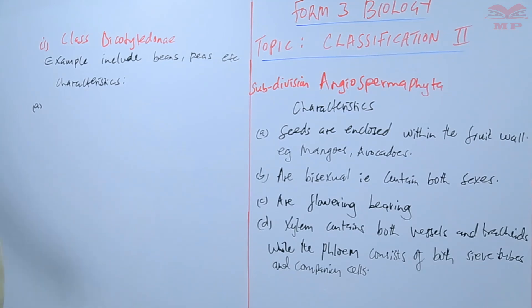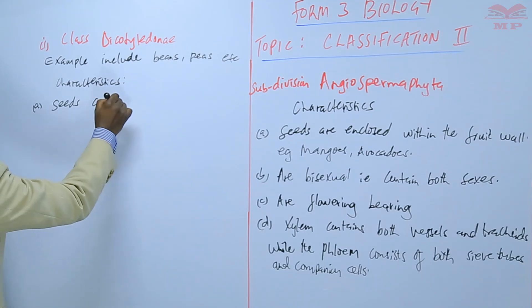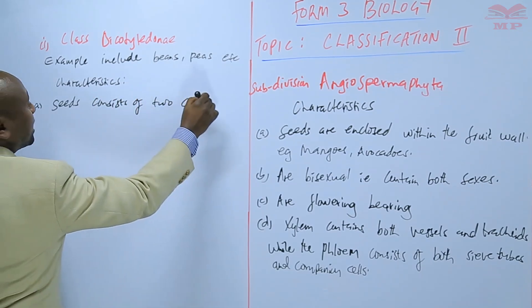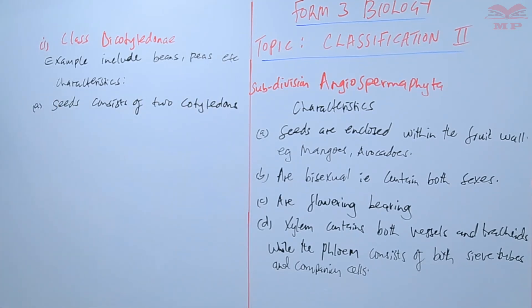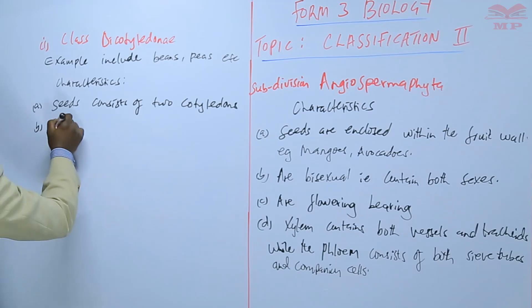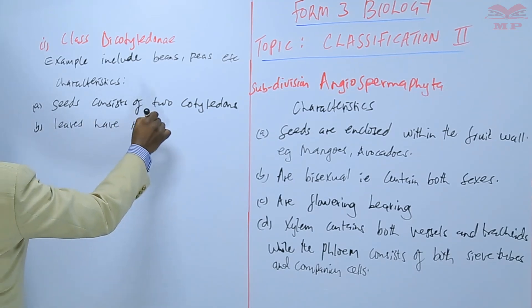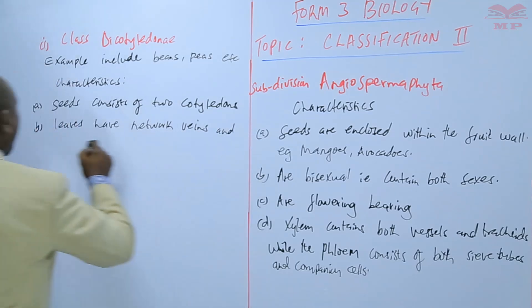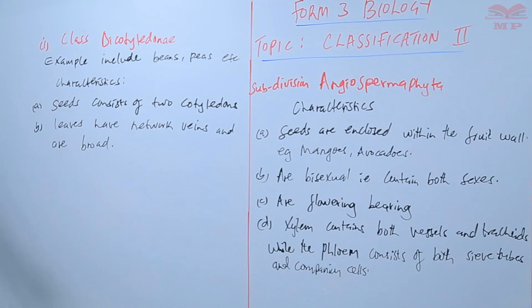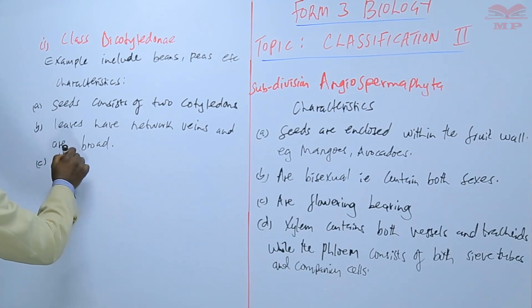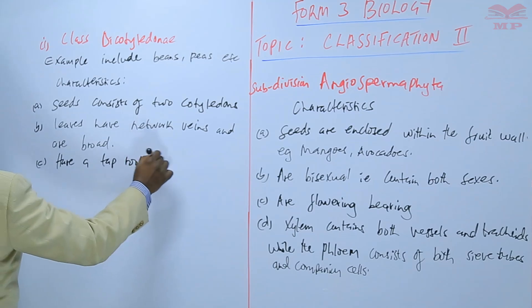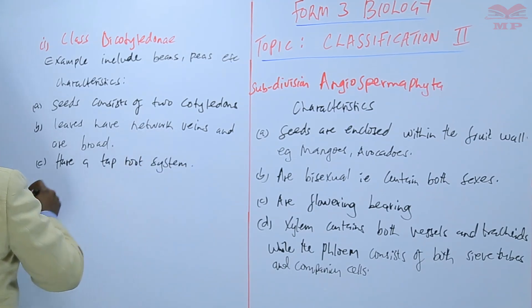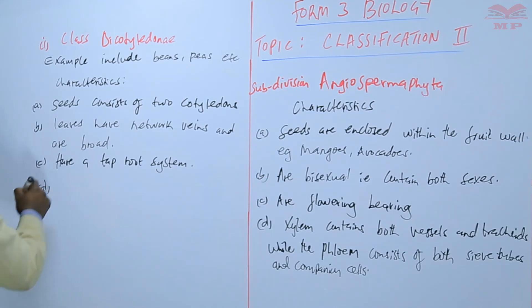The characteristics of Dicotyledonae — as the term suggests, their seeds consist of two cotyledons, hence the word Dicotyledonae. In terms of the leaves, the leaves have network veins and are broad. In terms of the roots, they have a taproot system.